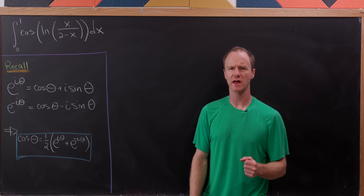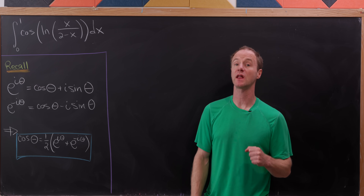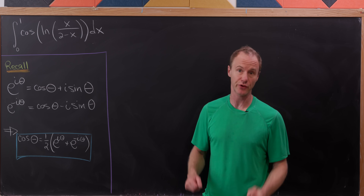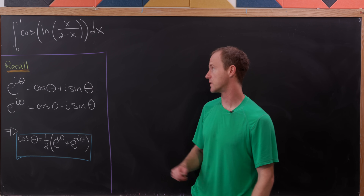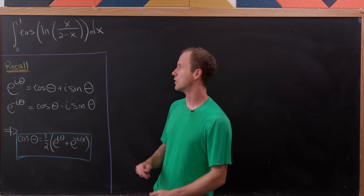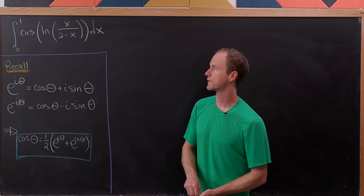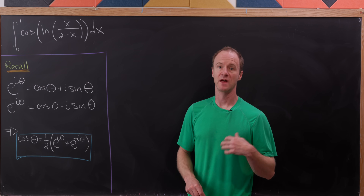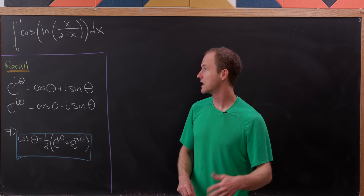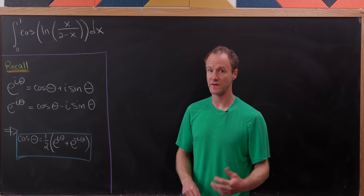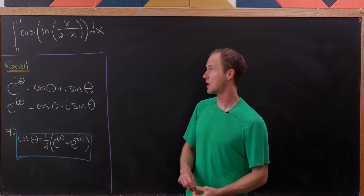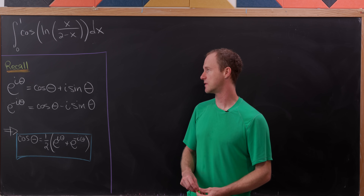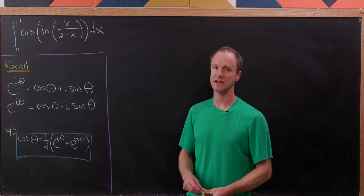Today we've got an integral that is going to use a lot of really nice tricks that I think you can learn a lot from. We've got the integral from 0 to 1 of the cosine of the natural log of x over 2 minus x, dx.